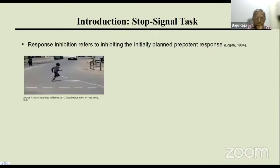For example, consider a child trying to cross a road. He has planned to cross but suddenly a car comes around the corner. The child tries to stop himself — this is response inhibition, where we first plan something and then try to suppress our initial plan.